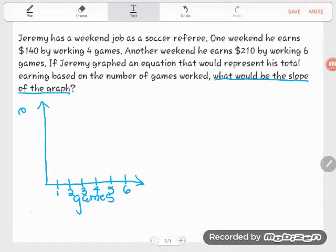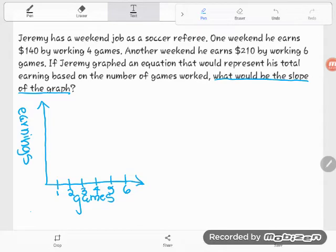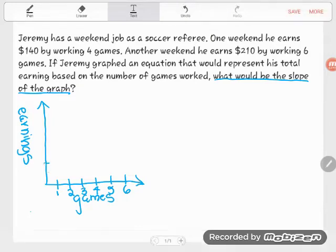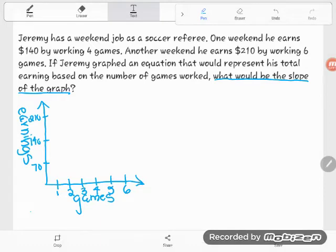That's because that's the dependent variable - the earnings depend on the number of games he plays. I have 140, 210. I don't want to make 210 little dashes. Looks like I can count by 70s: 70, 140, 210. That was just for labeling purposes. If you can't count by 70, that's not that big of a deal, but we do need to make sure that 140 and 210 are on this graph.